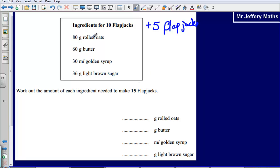So if I've got 80 grams of rolled oats for 10 flapjacks, I'm going to need half of that added on to get me another 5. So that gives me 120. Again I'm going to have to add half of the 10 flapjacks for butter, so on to what we've already got, that would give me 90. So I've just halved 60 and added 30 on. This one I'm going to get 45. And for this last one I'm going to have to add on half of 36, 18 on top of 36, that's going to give me 54.